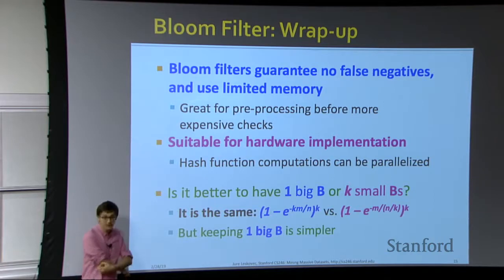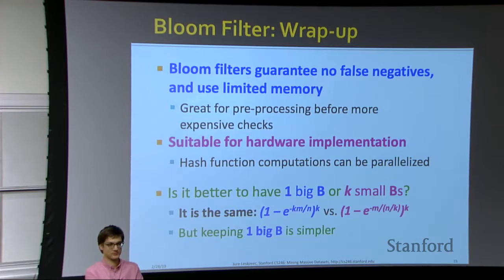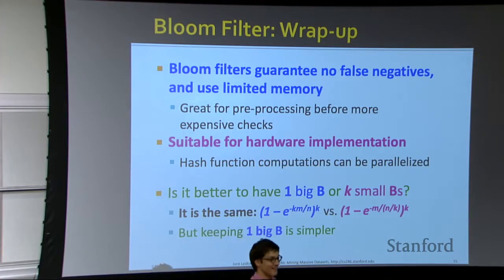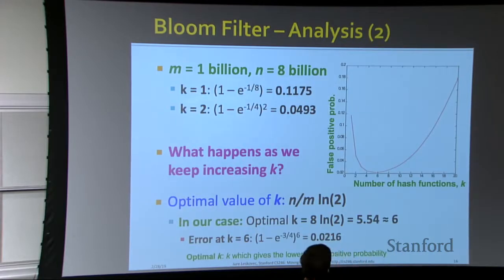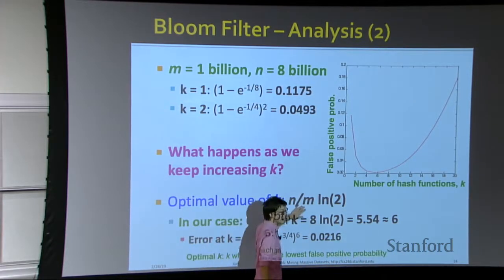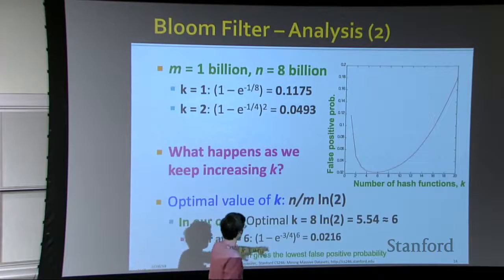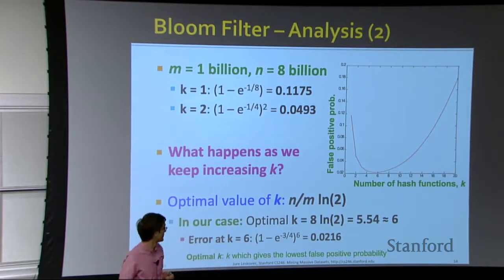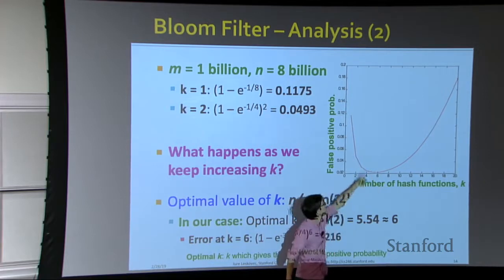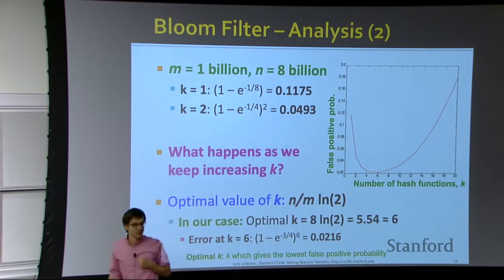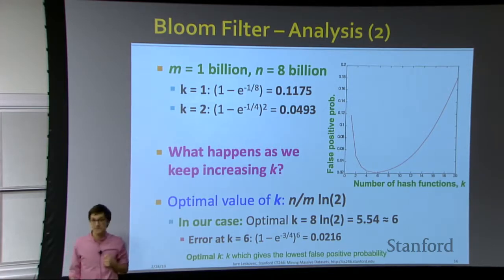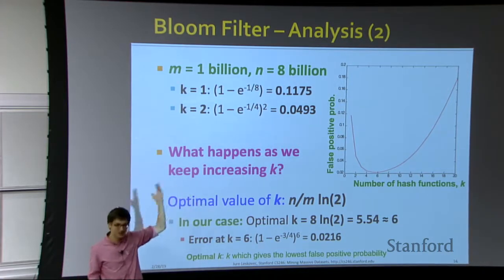Bloom filters guarantee no false negatives — everything that should pass through does — and use a limited amount of memory. They're very useful for pre-processing before more expensive checks. They can even be implemented in hardware, and all hash functions can be computed in parallel. As for deriving the optimal k, you just take the derivative of the error formula, set it to zero — it's convex so it's straightforward, or you can do it numerically.